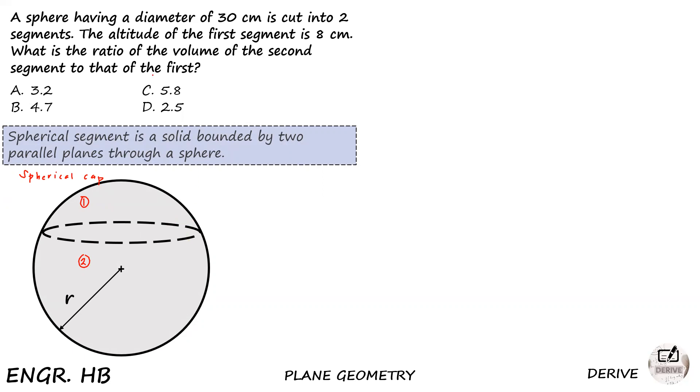Since the question is looking for the ratio of the volume of the two segments, let us see first what is the formula of volume of the segment. The volume of the segment is πh² over 3 times 3r minus h. What we're looking for is the ratio. The ratio of the volume of the second segment to that of the first. V₂ represents the volume of the second segment and V₁ represents the volume of the first segment. And of course, the formula is πh² over 3 times 3r minus h.